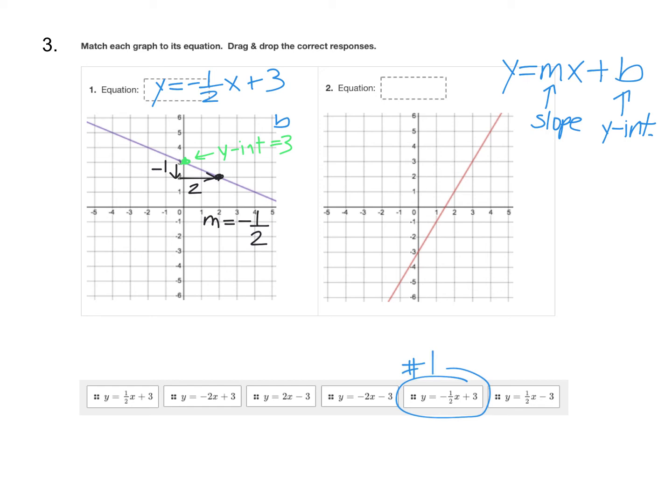Then you'll do the same on number two. Number two has a y-intercept at negative three. So that's our b value. And then for slope, I'm going to choose some nice points there.